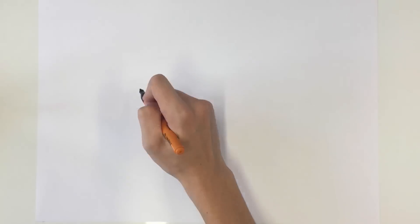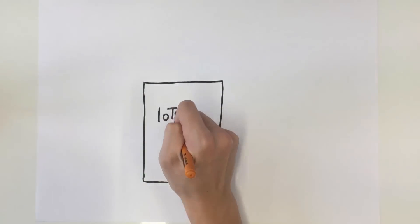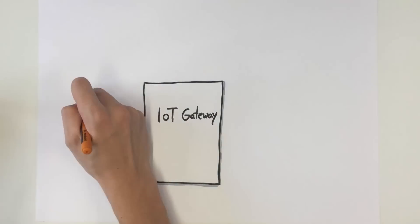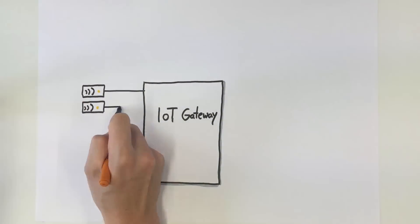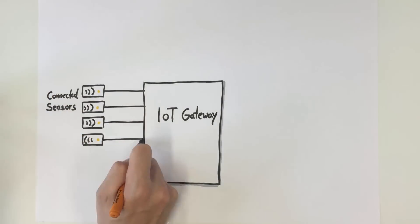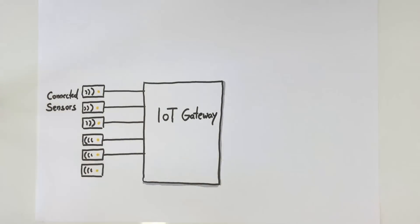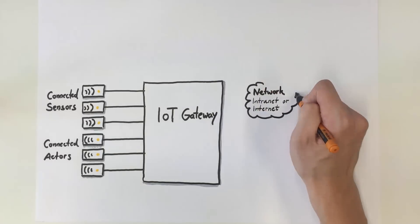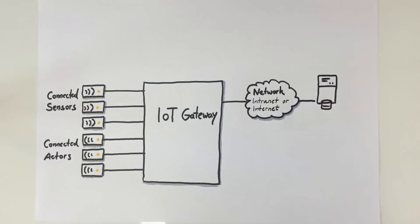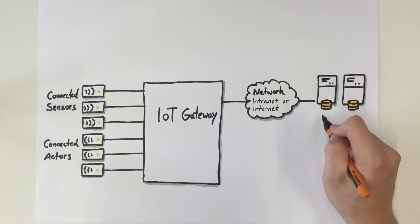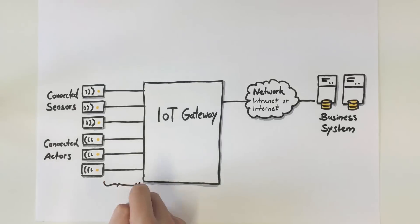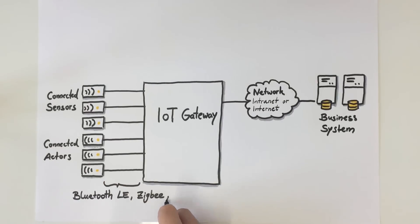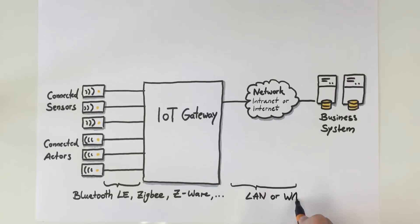The IoT gateway is another example, following the same primary purpose of connecting different communication technologies. The IoT gateway builds the bridge between sensors and actors on the one hand and the Internet or an intranet on the other. Examples of communication technologies used by sensors and actors are Bluetooth LE, ZigBee, and Z-Wave. The other side of the communication in IoT gateways is local or wide area networks.